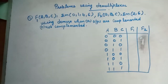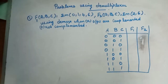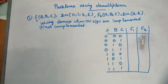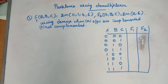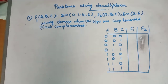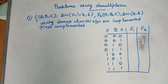So we know what a demultiplexer is. This is a problem using a demultiplexer. In the problem it is given that F1 of ABC equals sigma M(0,1,4,6), and F2 of ABC equals sigma M(2,6). Implement this using a demultiplexer. There are two questions: first is when the outputs are complemented, and second is when outputs are not complemented.